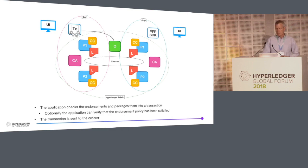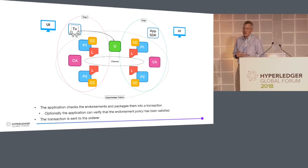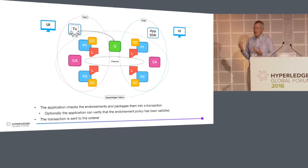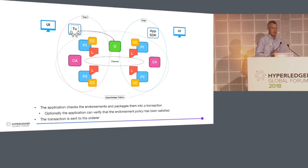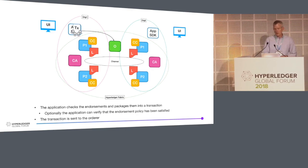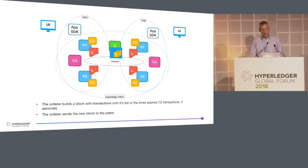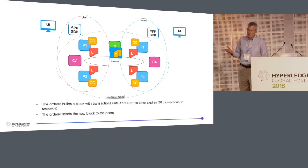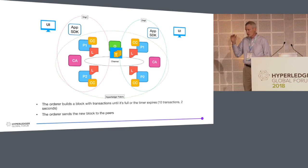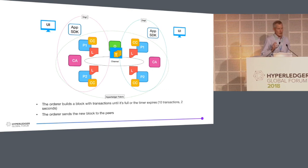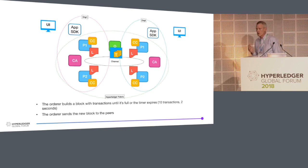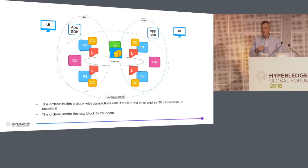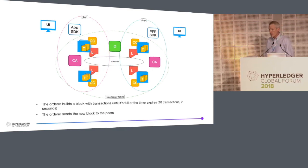The application will take each of those endorsements and create a real transaction — it'll have the transaction proposal, the results from the chaincode, and the digital signatures from each of the peers. It'll send that transaction to the orderer. The orderer at this point will put it into a block. The orderer doesn't do any validation — it doesn't run chaincode, it doesn't have the world state. All it does is take this transaction, put it into the block, and put the transactions in order in the block. Then it'll fill that block up, or if the timer goes off, it'll go ahead and send the block. For our demonstration, we use the default values of 10 transactions per block or two seconds. Then the orderer will distribute that block out to each of the peers.